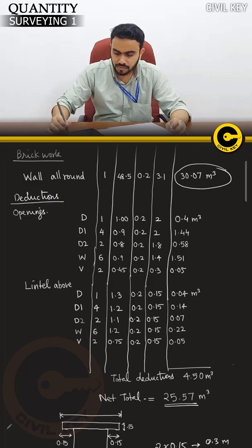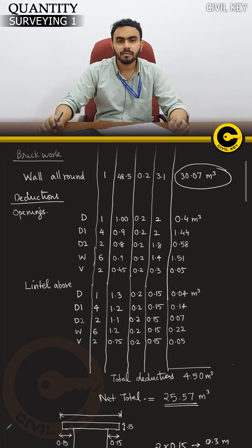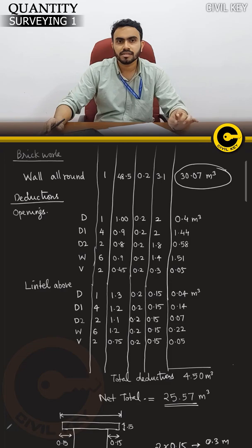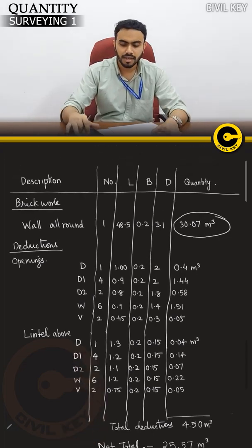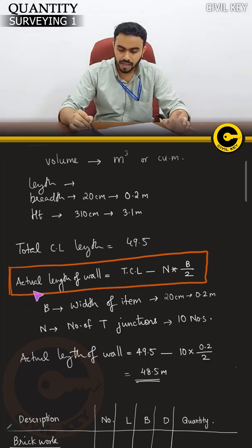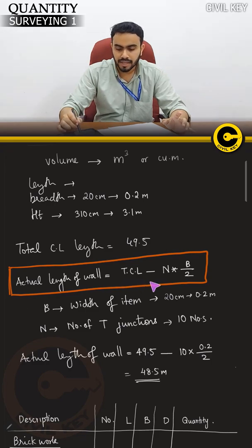Net total equals 30.07 minus 4.5, which gives 25.57 m³. This is the quantity of brickwork. We adjust for the deductions — this is the final equation.